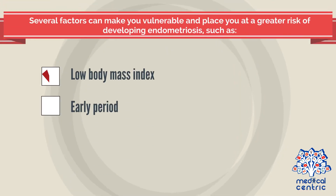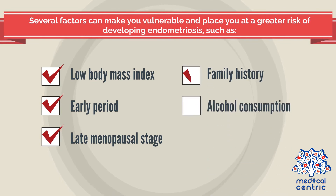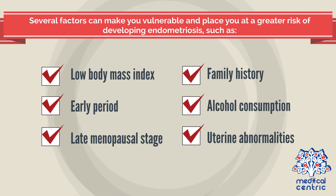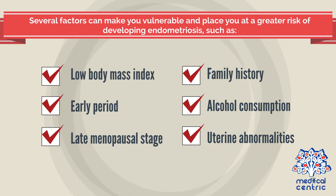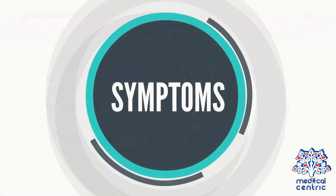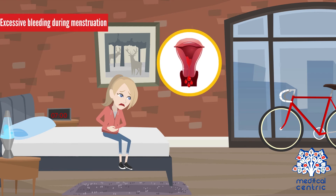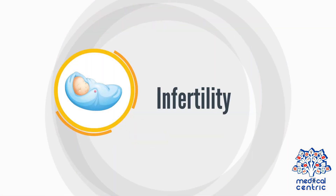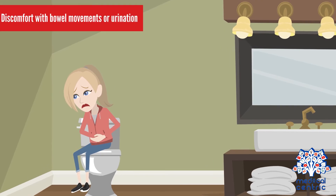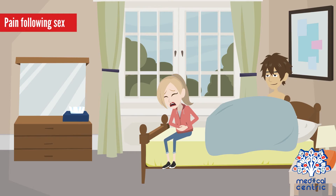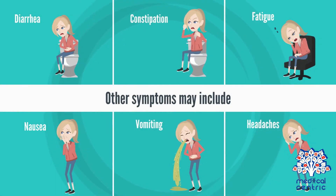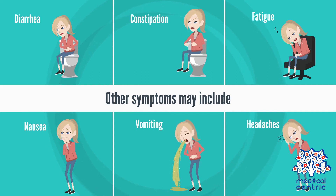Several factors can place you at a greater risk of developing endometriosis, such as low body mass index, early period, late menopausal stage, family history, alcohol consumption, and uterine abnormalities. Symptoms include painful periods, pelvic pain, excessive bleeding during menstruation, infertility, discomfort with bowel movements or urination, and pain following sex. Other symptoms may include diarrhea, constipation, fatigue, nausea and vomiting, or headaches.